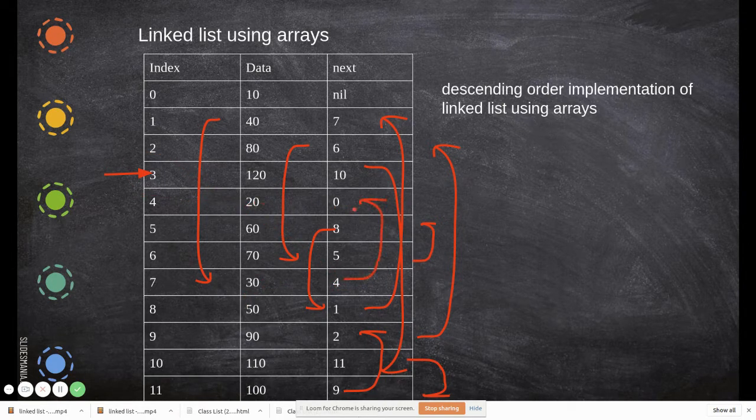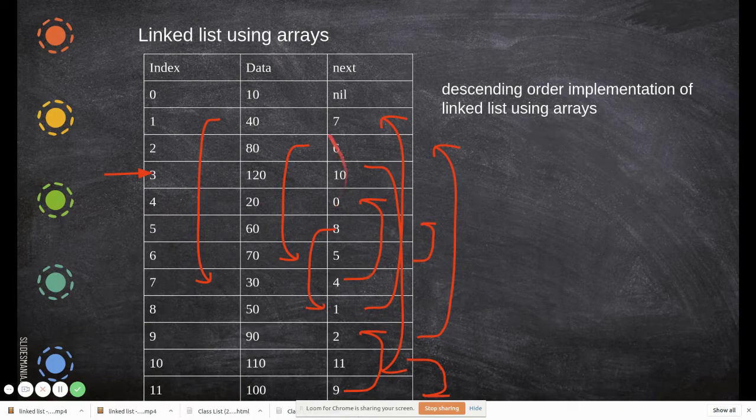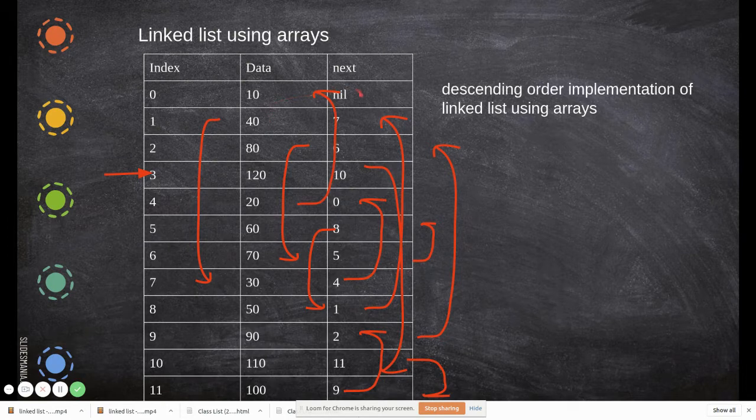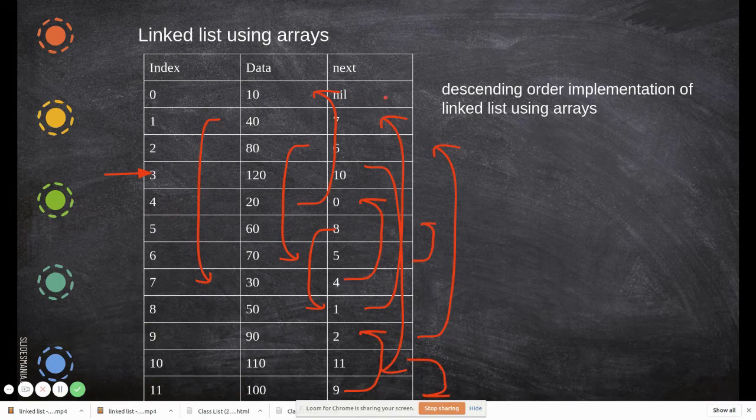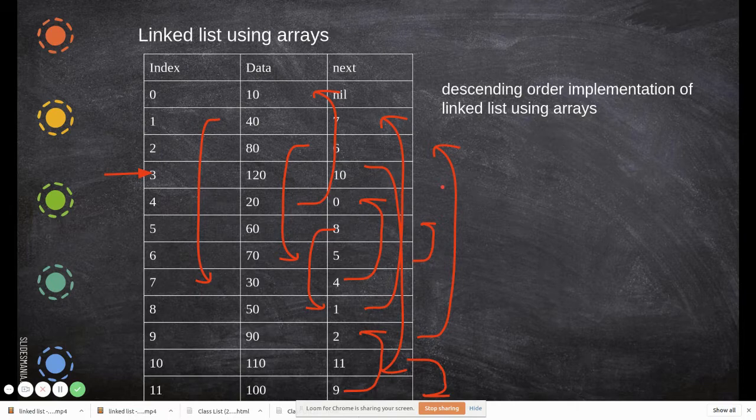From 7 to 30, then from 30 the next smallest element you can find it in location 4, this is nothing but 20. Then you have to go to 0 where you will find the smallest element. Then finally with this the list is mobile, so we write in the next field to be null. This is how you traverse the element in this linked list.